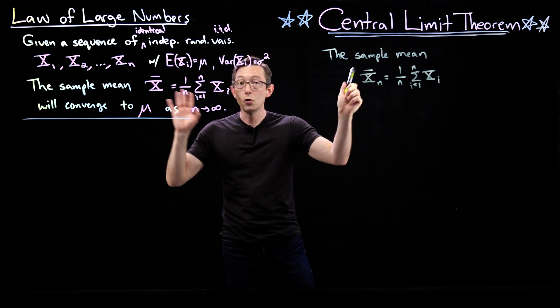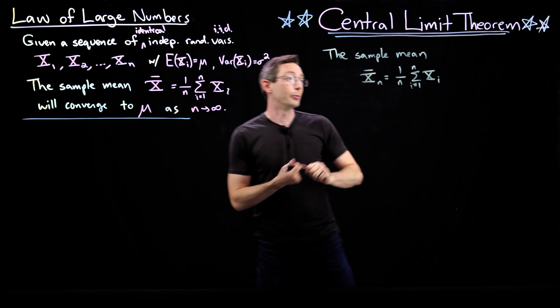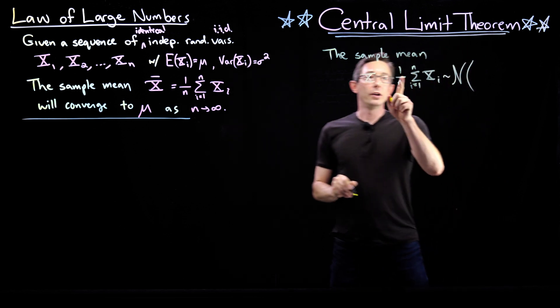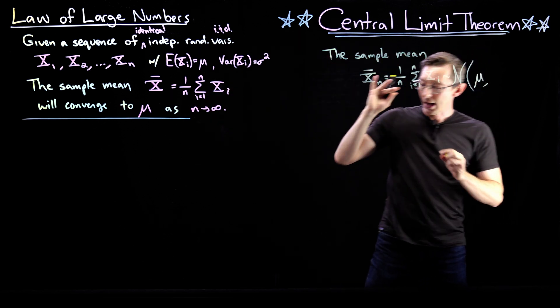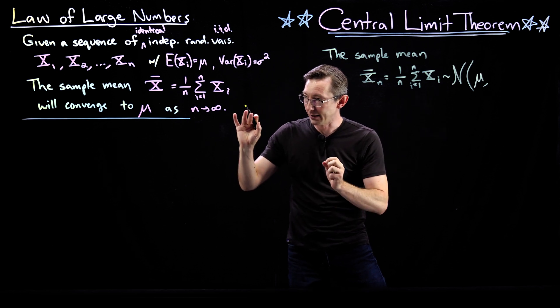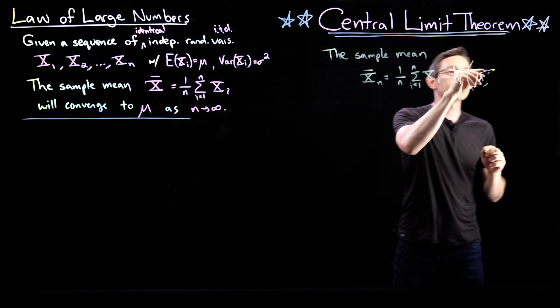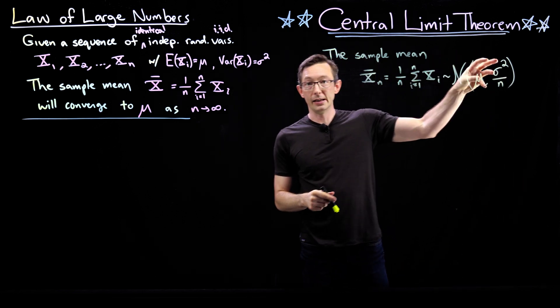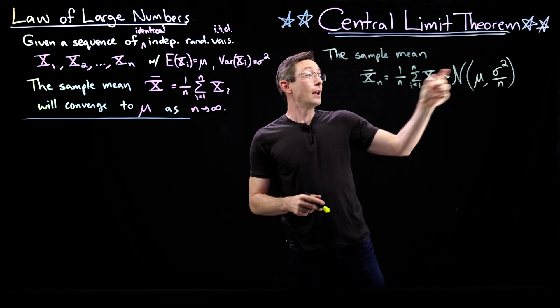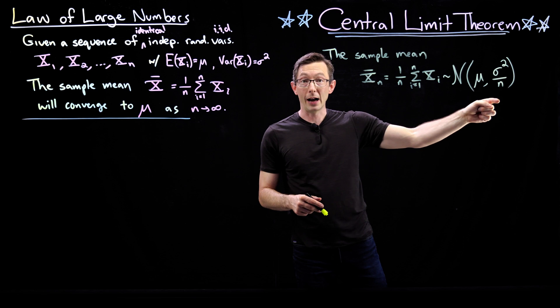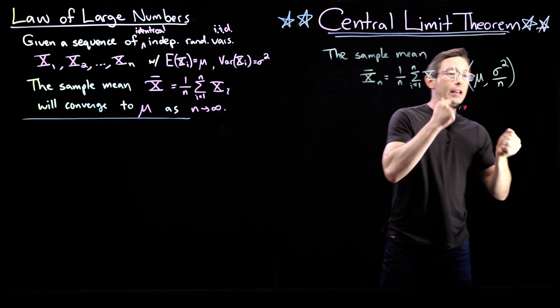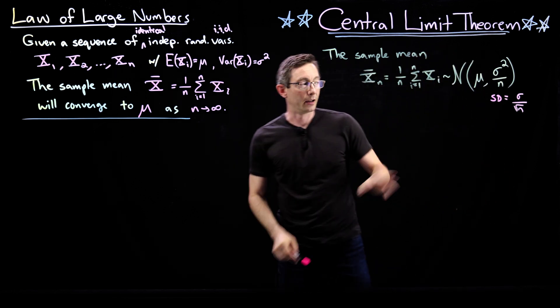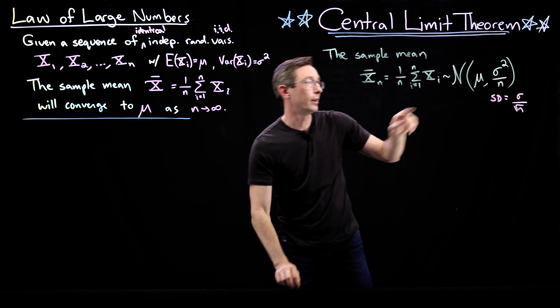This is going to be a normally distributed random variable. This is normal with mean mu and variance sigma squared over n. So the variance of this sample mean is sigma squared over n, meaning its standard deviation, the SD is just sigma over root n. That might make you feel more comfortable. This is the mean.